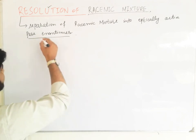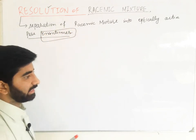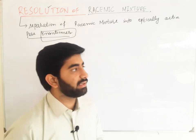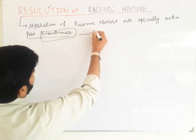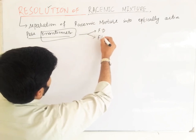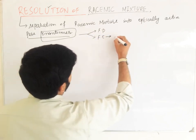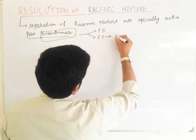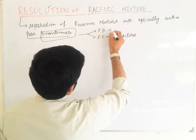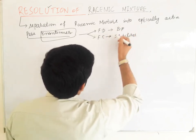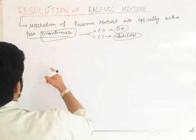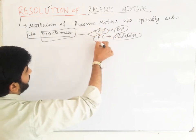As we know that enantiomers have the same physical and chemical properties like melting point, boiling point, density and solubility. So we cannot separate the enantiomers by fractional distillation or by fractional crystallization technique, because fractional crystallization is based on solubility and fractional distillation is based on boiling point. Since enantiomers have the same melting point and solubility, they cannot be separated directly by these techniques.